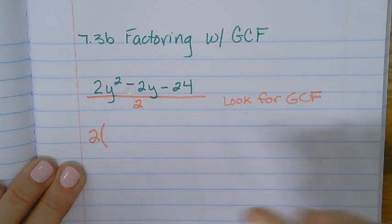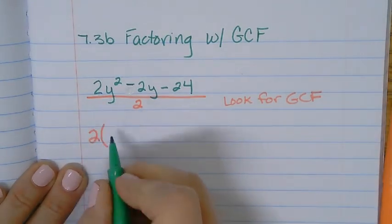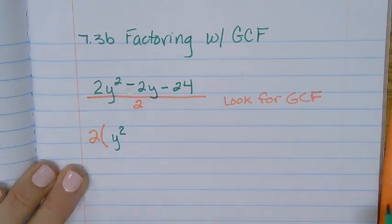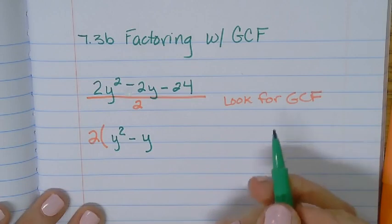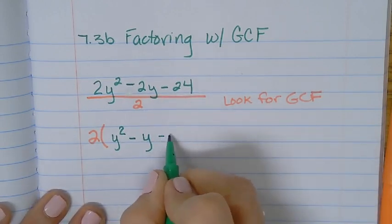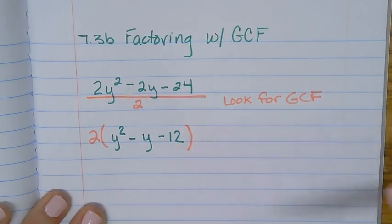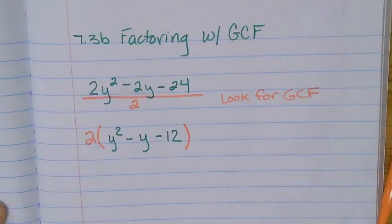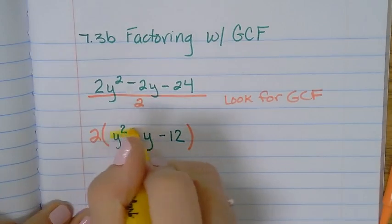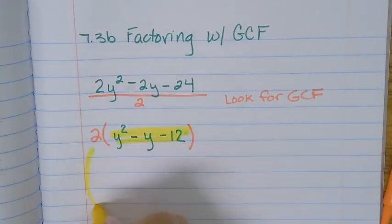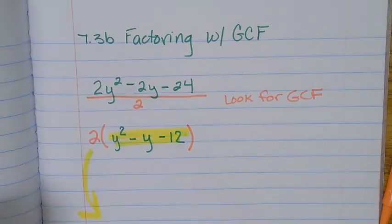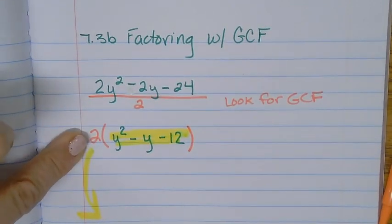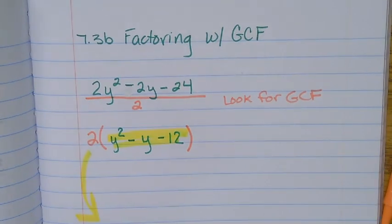And that 2 is going to come and sit up front. 2 divided by 2 is 1, so it's just y squared. 2 divided by 2 is 1, so I can put a negative y or a negative 1y is fine. And then 24 divided by 2 is 12. So now we just have to factor this trinomial, and that 2 is going to come down and be part of your final answer. But for now you can kind of just set it aside as long as you remember to bring it down. I drew that arrow down to help remind me to put it as part of my final answer.